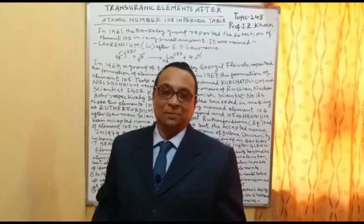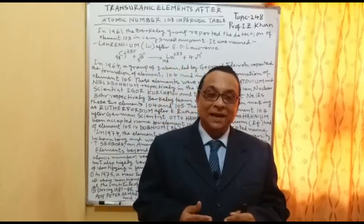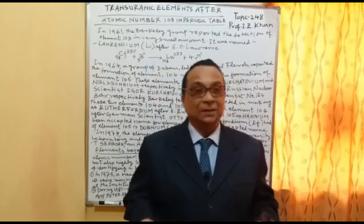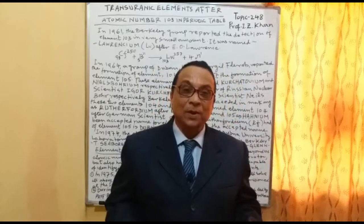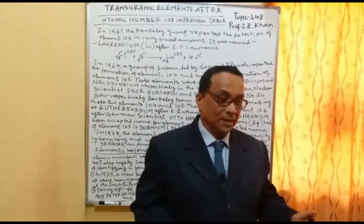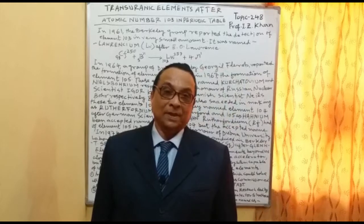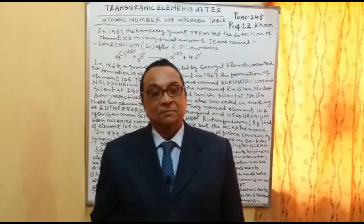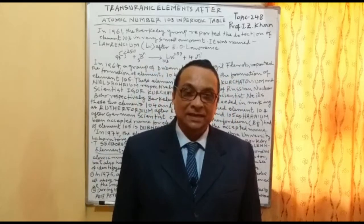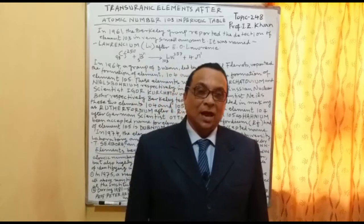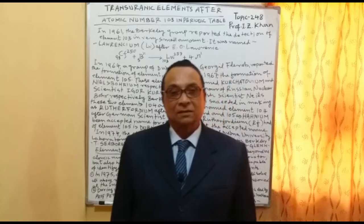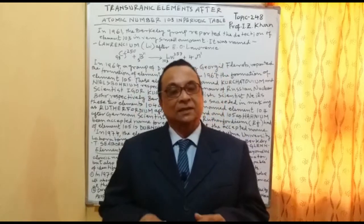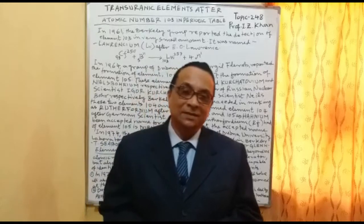Some of these elements came even after 1985 or 1990, and some still have not been given an IUPAC name because their lifetime is so short — in millionths of seconds they appear and disappear. In the periodic table, elements have been predicted up to number 119, but their half-life is so short that they are still not listed with IUPAC nomenclature. These are very interesting trans-uranic elements.